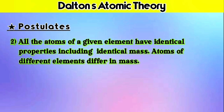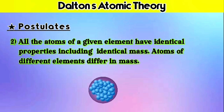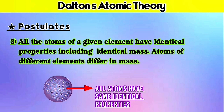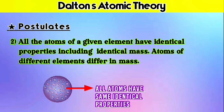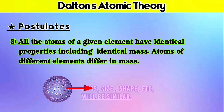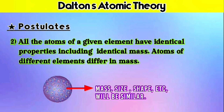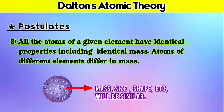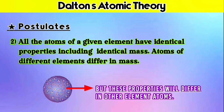Atoms of different elements differ in mass. It means that all the atoms of one type of element will have the same identical properties — including mass — compared to other atoms of that particular element. Identical properties here means mass, size, shape, etc. of that atom. One atom's properties will be similar to all other atoms of the same element, but will differ from atoms of other elements.